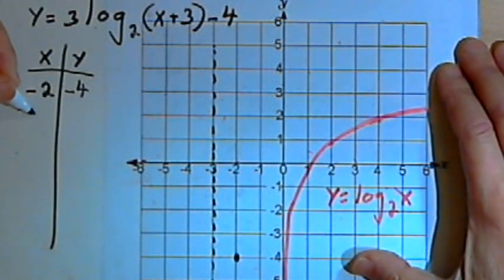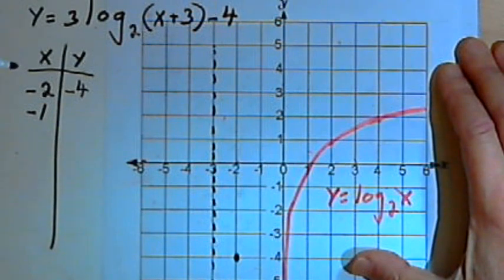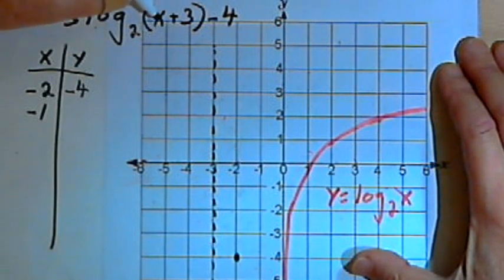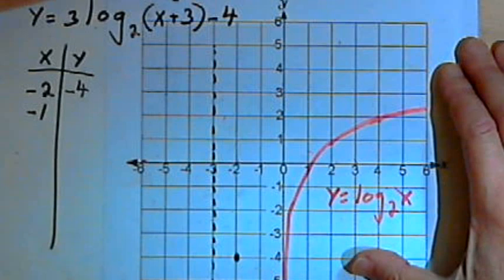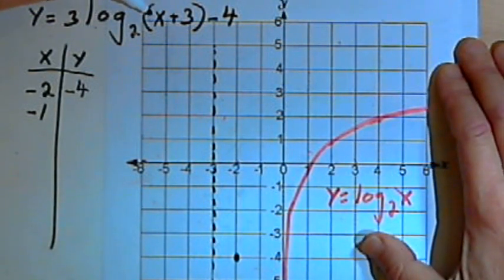I'm going to use negative 1 for an x value, because that will take this x plus 3 and turn it into negative 1 plus 3, which is 2. And whenever the base and the number you're taking the logarithm of are the same, then the whole logarithm equals 1. So I'm going to have the log base 2 of 2, which equals 1,